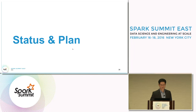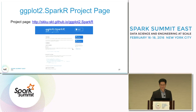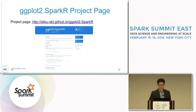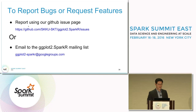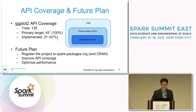The next three slides show the status and plan of our project. We have a project webpage with details and GitHub links. To report bugs or request features, you can use the GitHub issue page listed there, or send an email to the ggplot2.sparkr mailing list.